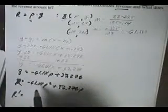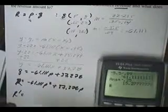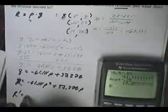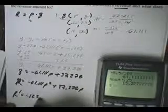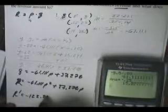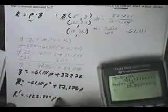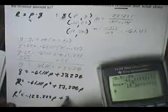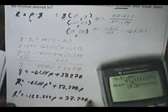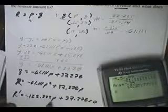Now, the derivative of revenue, we'll multiply all that by two. That'll give me negative 122.222p plus 37.278. And we will set all this equal to zero and then solve for p.